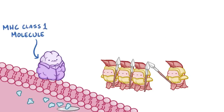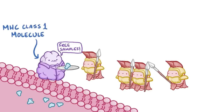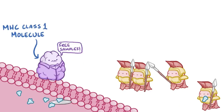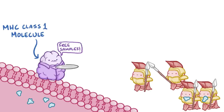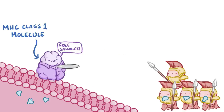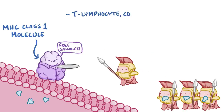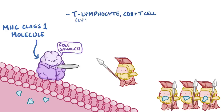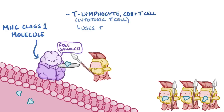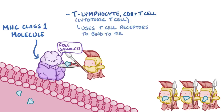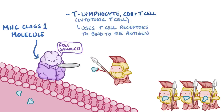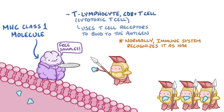These specific proteins act kind of like a serving platter, and present molecules from within the cell for the immune system to continually sample. A type of T-lymphocyte called a CD8-positive T-cell, also known as a cytotoxic T-cell, uses its T-cell receptors to bind to the antigen presented by the MHC class 1 molecule. Normally the molecule is just a sample from the cell, and the immune system recognizes it as harmless. This is known as a self-antigen, and there's no response.